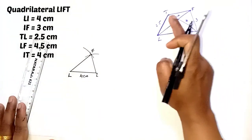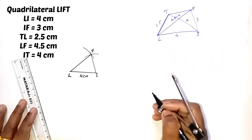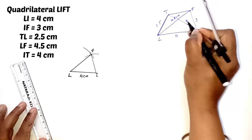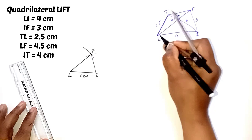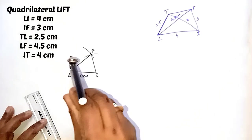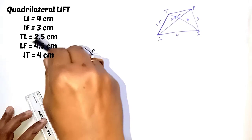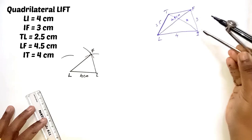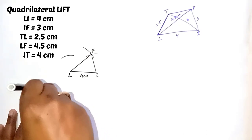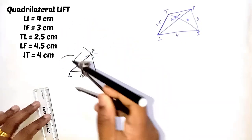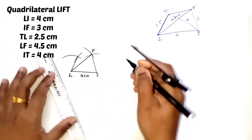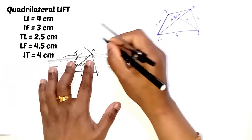Now we want the fourth point T — you have to locate point T. T is 2.5 cm away from L and T is 4 cm away from I. So take 2.5 cm with center L and draw an arc, then draw an arc with 4 cm radius from center I. This is the point T. Join F and T also.